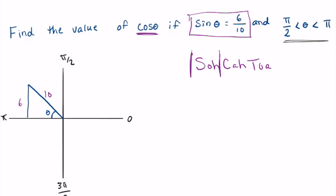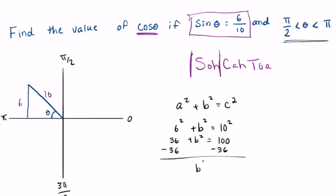Well, utilizing our Pythagorean theorem, what I'm going to do is I'm just going to solve for that missing side. So we have a² + b² = c². So we have 36 + b² = 100. Subtract 36 from both sides, wind up with b² = 64. Take the square root and we get b = 8.